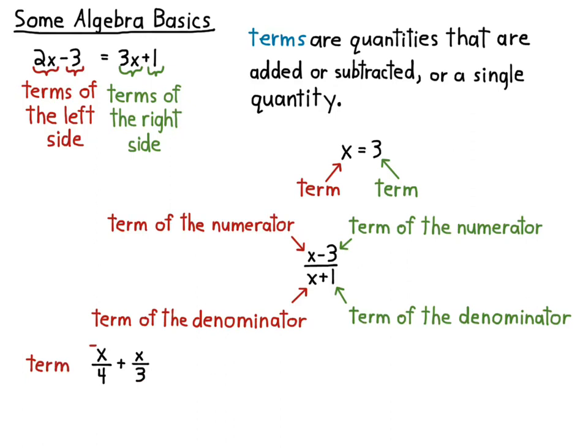x over 4 plus x over 3, there are two terms there. The first one is x over 4, and the second one is x over 3. That's two terms. They're being added.